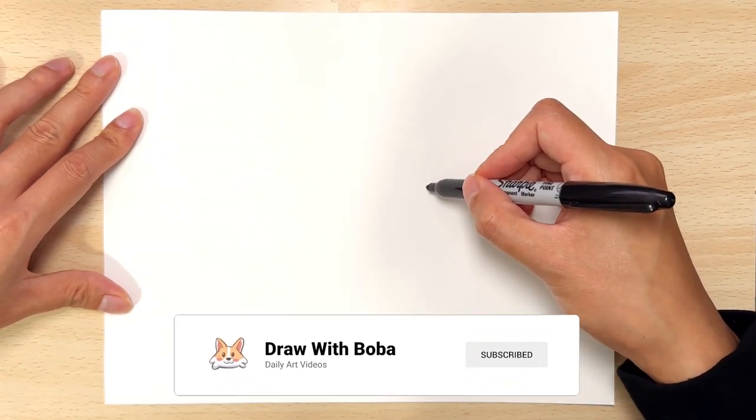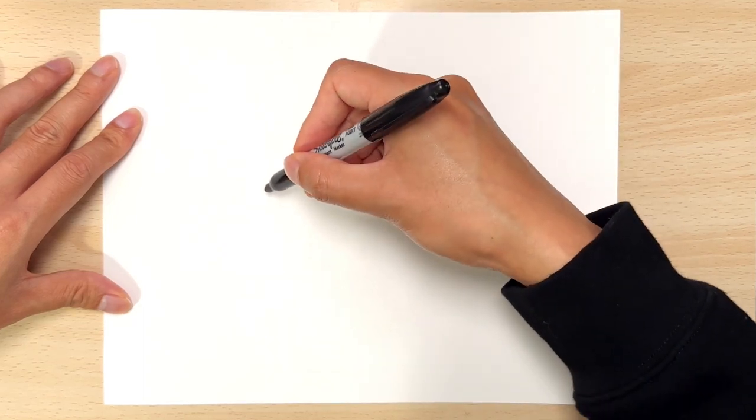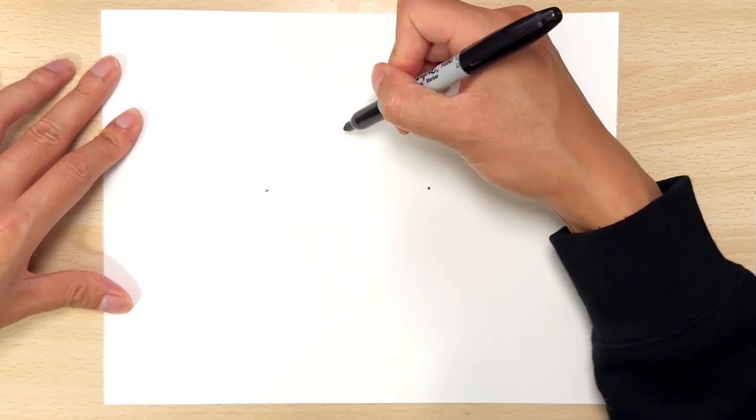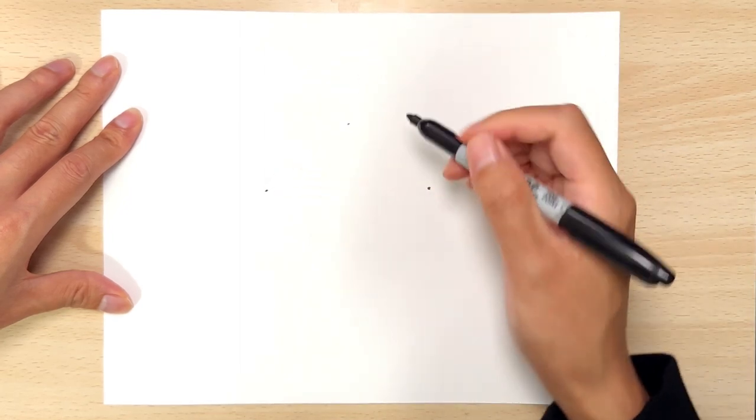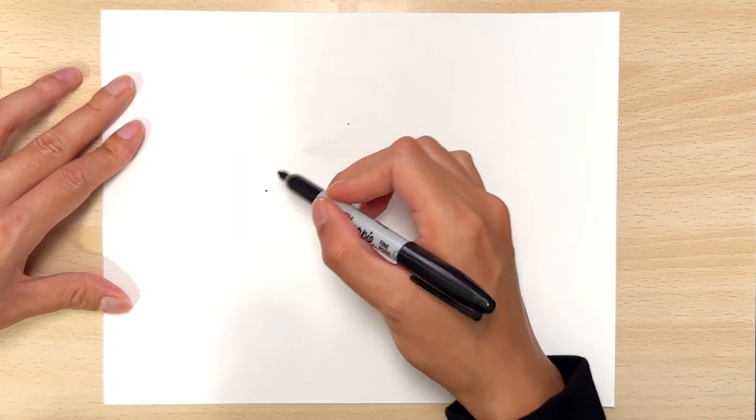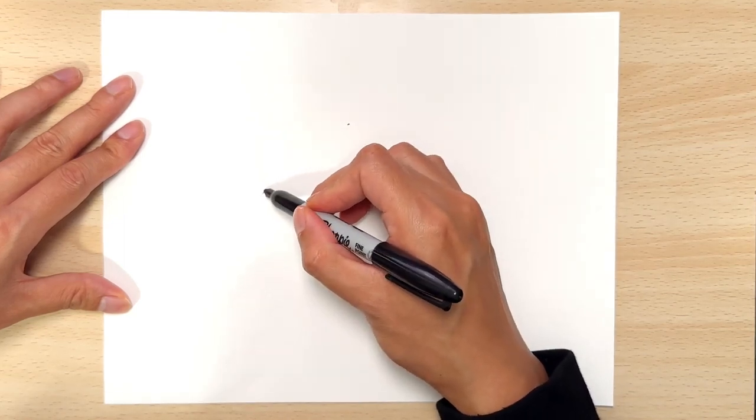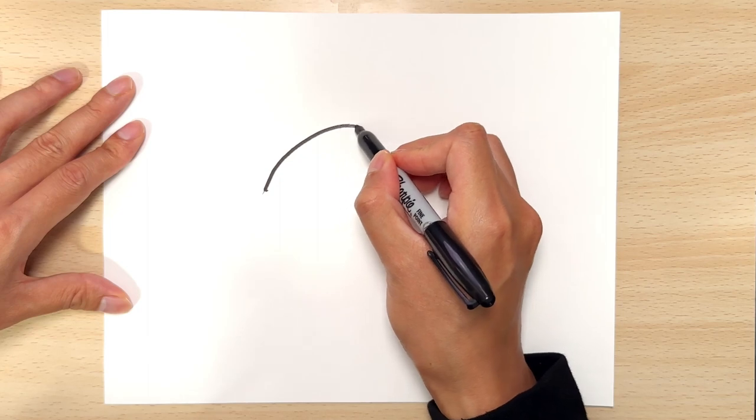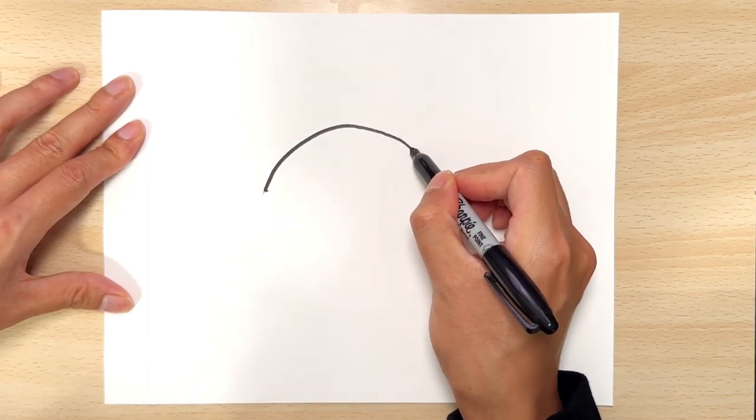We're gonna start with two dots on either side. This is gonna be the marker for the distance of our Squishmallow. One-third of the page across, and then we're just gonna draw a little dot on the top just so we know where we're gonna connect, and then arch your line to connect to the dot and back down to the other dot.